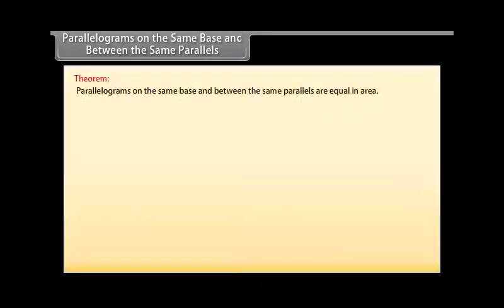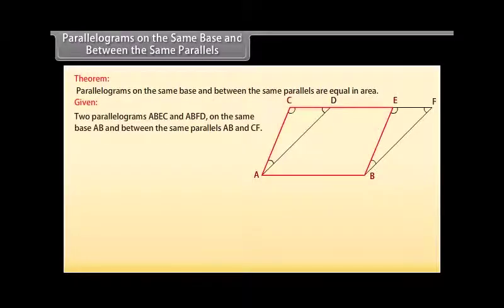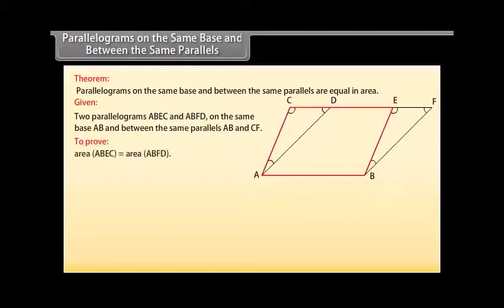Parallelograms on the same base and between the same parallels. Theorem: Parallelograms on the same base and between the same parallels are equal in area. Let us prove this theorem. Proof: Two parallelograms ABEC and ABFD on the same base AB and between the same parallels AB and CF are given. We need to prove that area of ABEC is equal to area of ABFD.